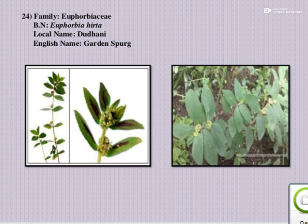The next one is Dudani — medium type. There are three types of Dudani: big Dudani, medium, and small Dudani. This is medium Dudani; English name is Garden Spurge; botanical name is Euphorbia hirta; family Euphorbiaceae.